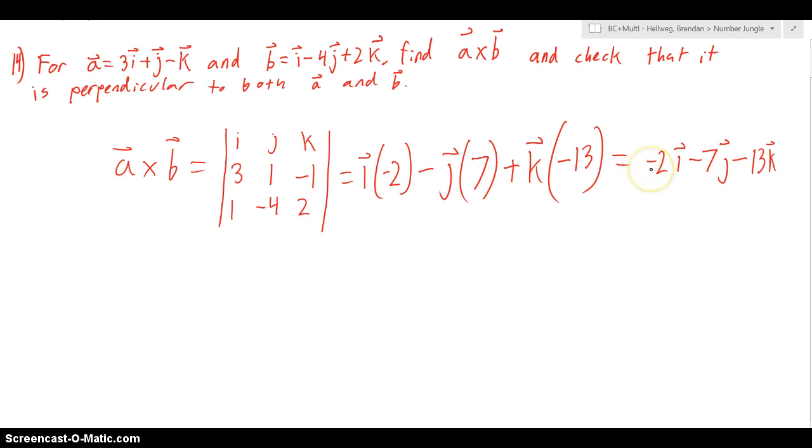So the next step that we want to do is check that this actually is perpendicular to both a and b. And so how we can do that is with vectors, we know that vector a dot, let's just call this vector c, when they're perpendicular will be equal to 0. And the same thing for vector b dot c will equal 0, if and only if they are perpendicular.